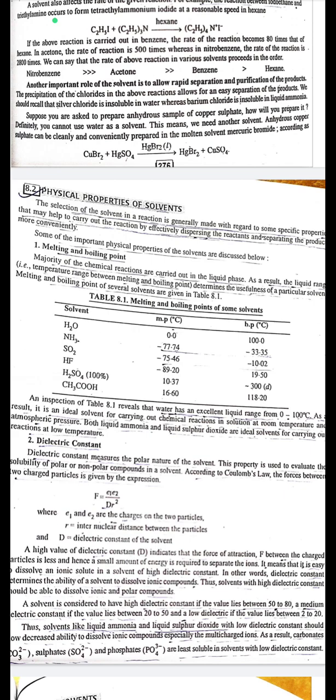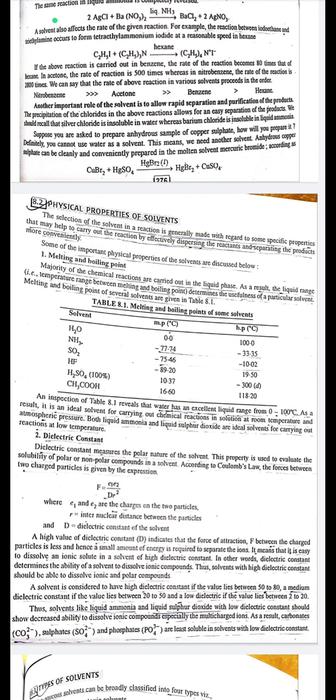Table 8.1: Solvents with melting and boiling points — H₂O: 0.0°C / 100°C; NH₃: −77.4°C / −33.35°C; SO₂: −75.46°C / −10.02°C; HF: −89.20°C / 19.50°C; H₂SO₄ (100%): 10.37°C / ~300°C; CH₃COOH: 16.6°C / 118.20°C. Water has an excellent liquid range from 0 to 100°C, making it an ideal solvent at room temperature and atmospheric pressure.